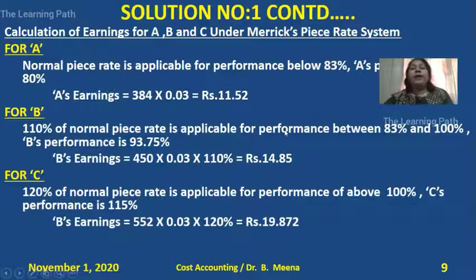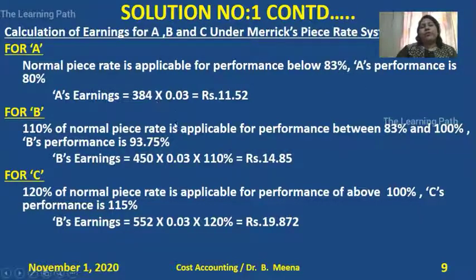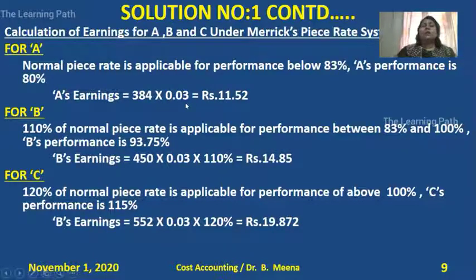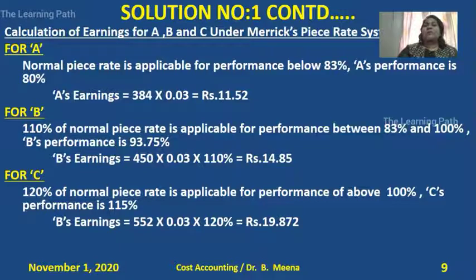Calculating earnings under Merrick's system: For Worker A, ordinary piece rate is applicable since performance is 80%, which is below 83%. So A's earnings = 384 × 0.03 = 11.52. A's earnings fall under the first rule of Merrick's system because the performance level of 80% is below 83%.